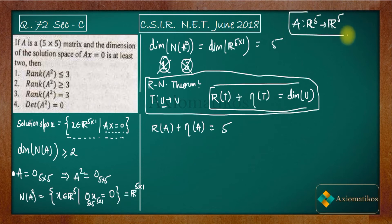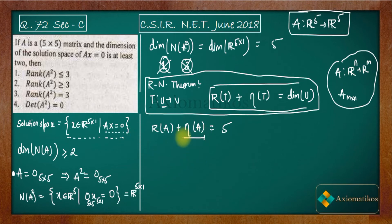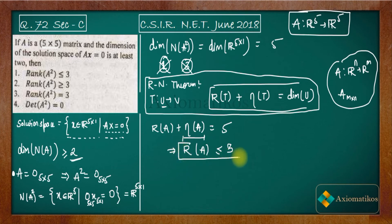Remember: if A is a matrix of order m×n, then A is a transformation from Rⁿ to Rᵐ. Since A is 5×5, rank(A) + nullity(A) = 5. It is given that nullity(A) ≥ 2, so rank(A) ≤ 3. The null space dimension being at least 2 forces the rank to be at most 3.